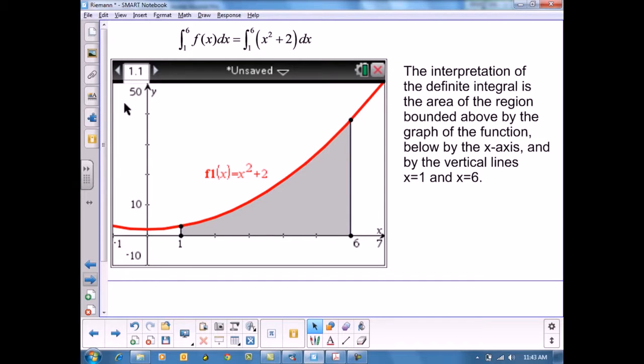This TNS document will help students understand how to use rectangles, both left endpoint, right endpoint, midpoint, and trapezoids to gain understanding of the approximation method that is commonly called Riemann sums.